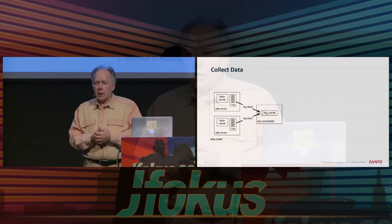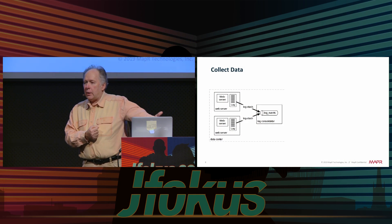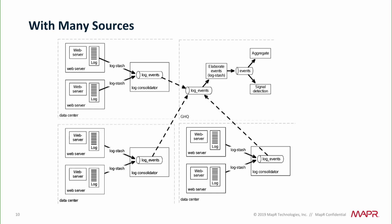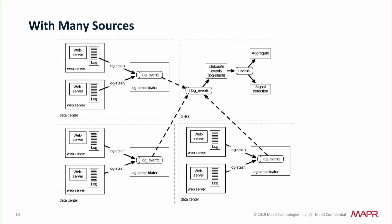So here's one thing that one of our customers does. They collect metrics, stick it in a stream, the stream magically replicates to a central cluster, and they do this from 50 or so data centers. In the central data center, they have processing that elaborates the events, stores it in tables, stores it in streams, stores it in files, and produces pretty pictures. From the user's point of view, they have a very simple idealistic view: there's a stream in an extended file system with a path name. You can run standard software like Elasticsearch or Drill against it. It's a very simple thing.